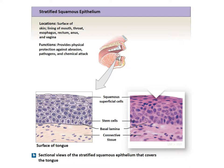The next is stratified squamous, seen in a lot of places in the body: the skin surface, lining of the mouth, throat, esophagus, vagina, and anus. It is used for protection against mechanical damage — primarily abrasion, but also against pathogens and chemical attacks. It comes in two varieties: keratinized and non-keratinized. Here we can see the squamous layer bound to a basal lamina at the bottom, and notice towards the apical surface it is flattened.